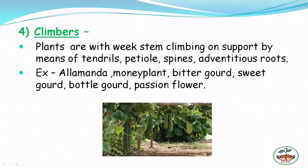The next group is climbers. Plants with a weak stem are called climbers. Climbers need support to grow by means of tendrils, petioles, spines, and adventitious roots. Here in this picture the stem of the climber is very delicate, so they need support to grow with the help of tendrils, petioles, spines, and adventitious roots. Common examples of climbers are allamanda, money plant, bitter gourd, sweet gourd, bottle gourd, and passion flower.